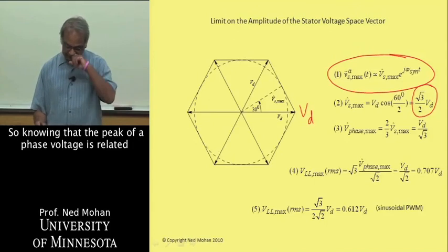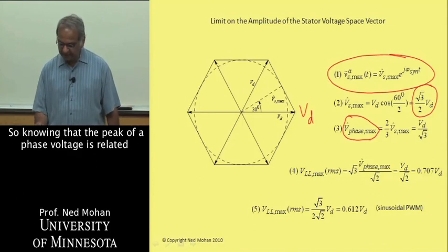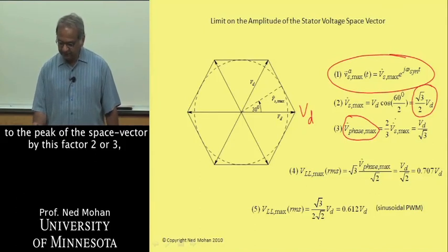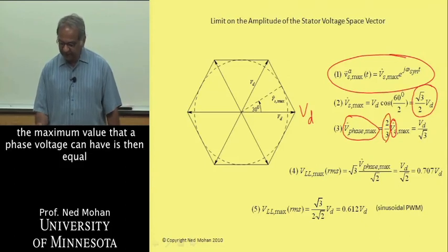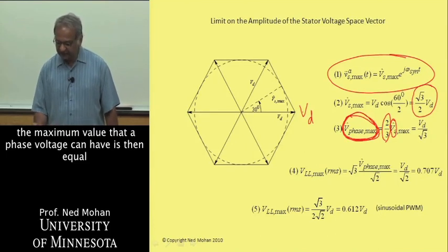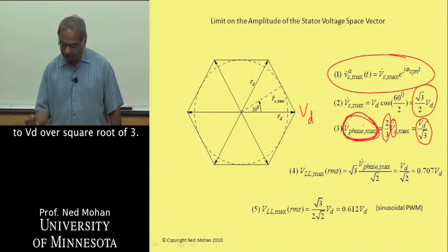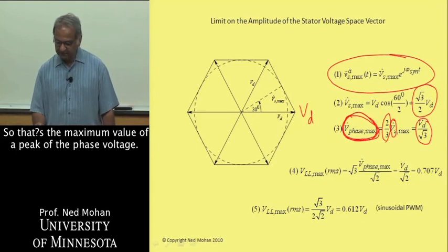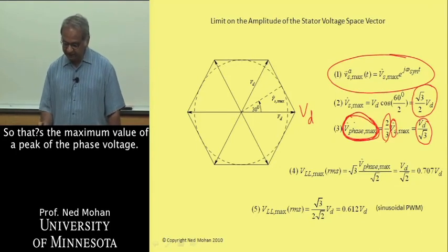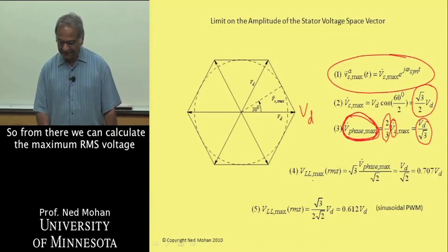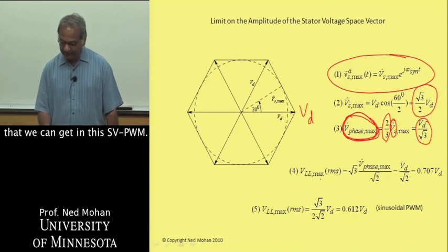If that's the case and each basic vector has a length of V sub D, we can calculate what the radius of this circle can be and that is at 30 degrees and it has this value √3/2 times VD. Knowing that the peak of a phase voltage is related to the peak of the space vector by this factor 2/3, the maximum value that a phase voltage can have is then equal to VD/√3.